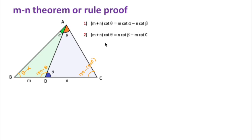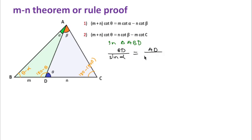Now for proving the first relation, we will use the sine rule in triangle ABD. Then we can write: BD over sin alpha equals AD over sin(theta minus alpha). Let this be the first equation. I will also use the sine rule in triangle ADC.